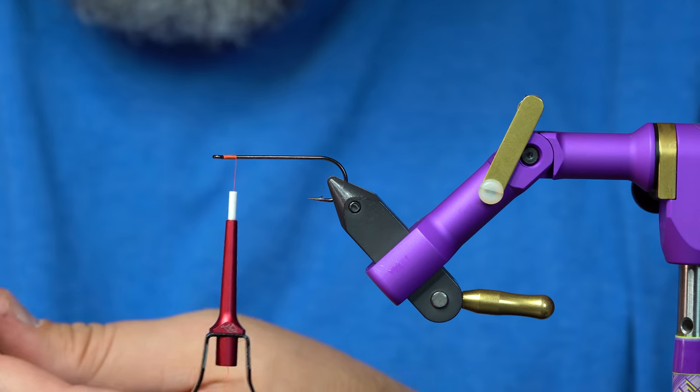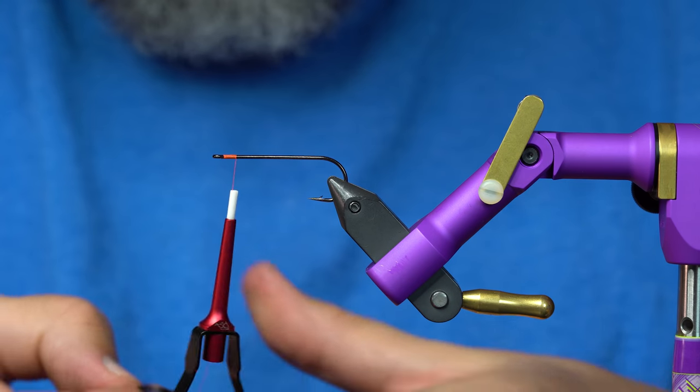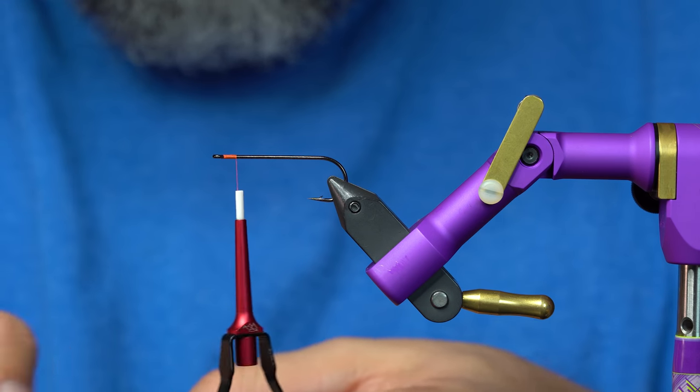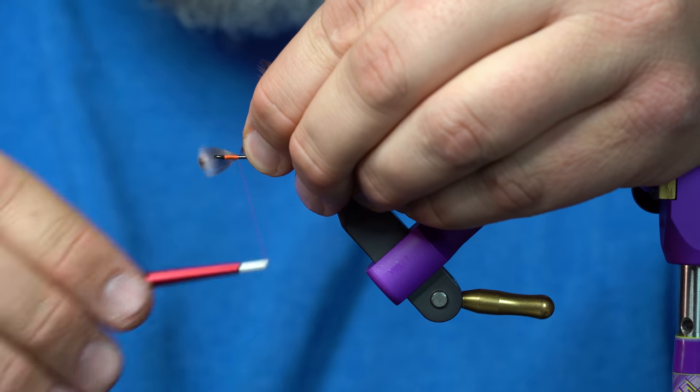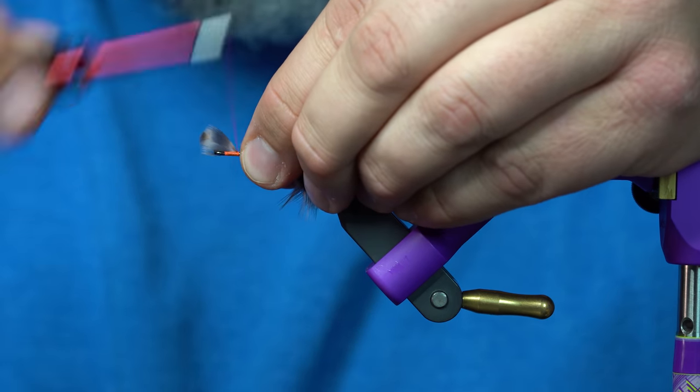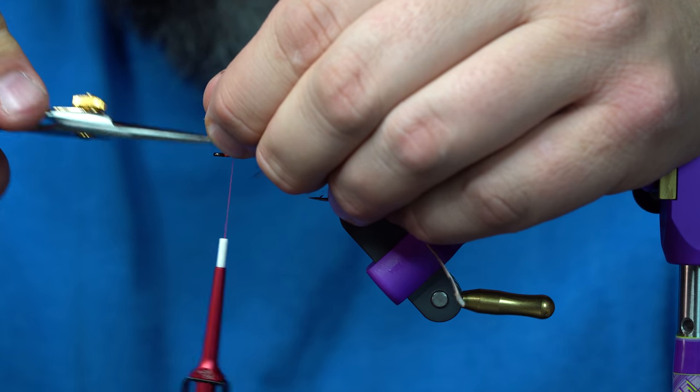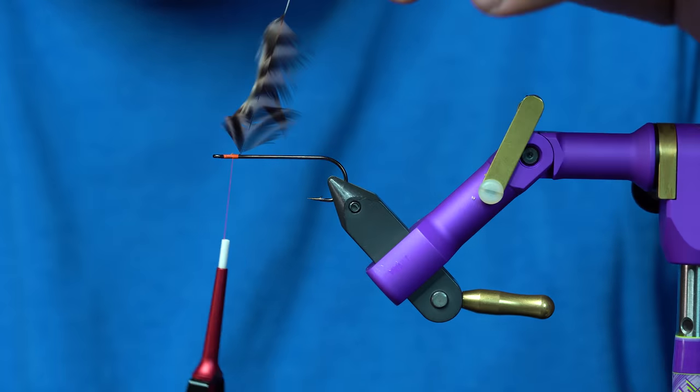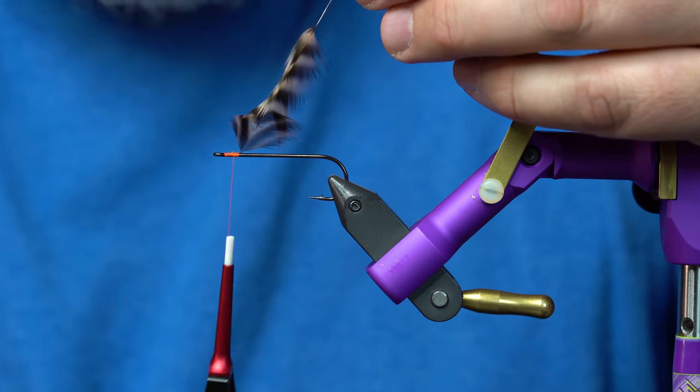I'll prep it by taking the fluff off and I'm going to tie it in tip first, just like you would with a normal feather. Doesn't have to be tied in tip first, I'm just preferring to use it that way on this demonstration.